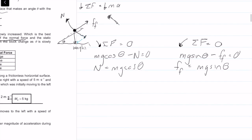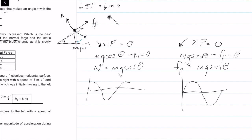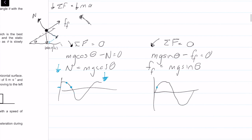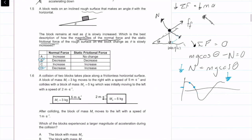As I increase theta, looking at the cosine graph: cos θ decreases, so the normal force decreases. Looking at the sine graph: sin θ increases, so the frictional force increases. I'm looking for where the normal force decreases and friction increases — that's option D. So the answer to 1.5 is D.